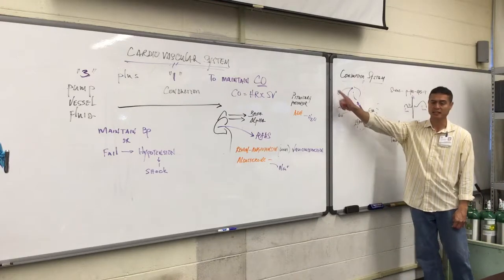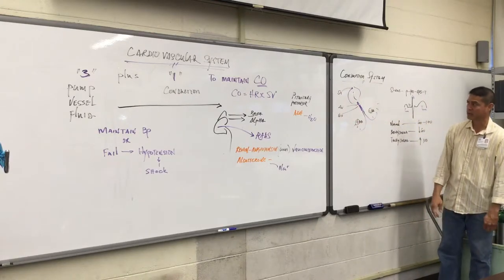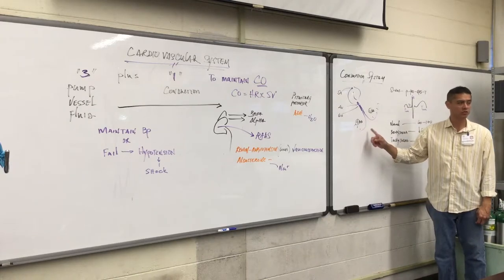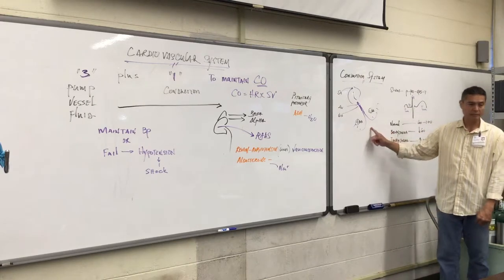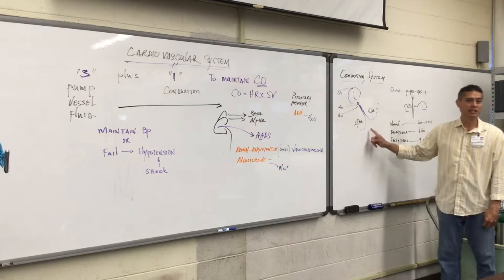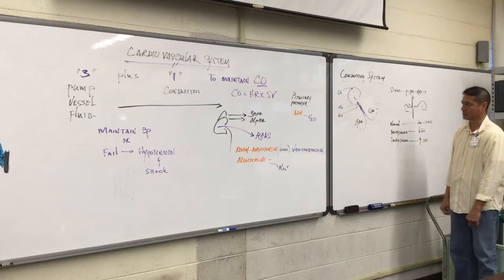Now a backup pacemaker site other than the SA node would be the junction AV node. And then somewhere down in the ventricles, really, really late, bad effects. Poor generator if it's generating from the ventricles.